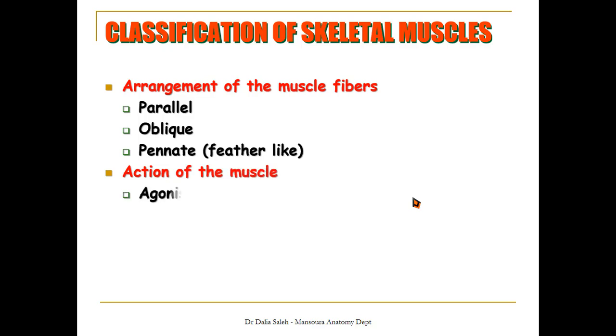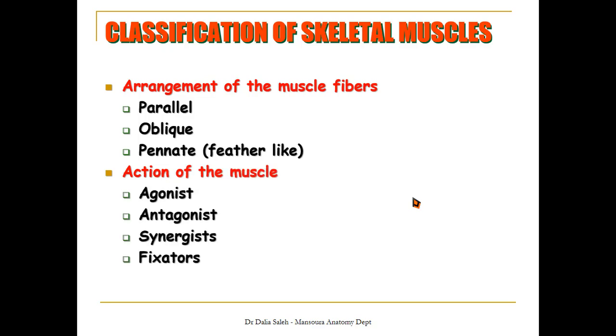We can also classify skeletal muscles according to their action into four types: agonists, antagonists, synergists, and fixators.